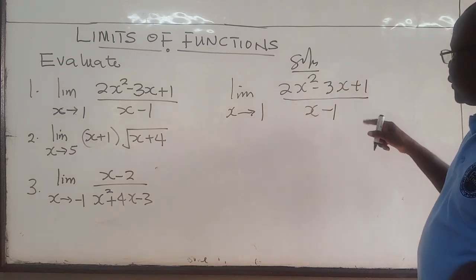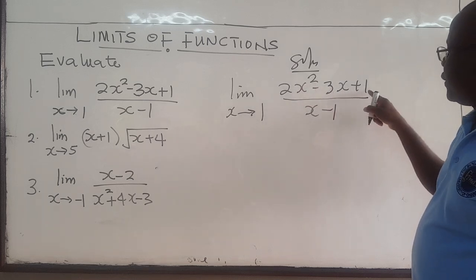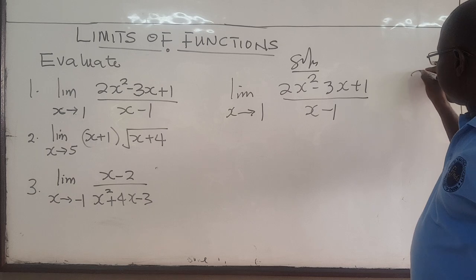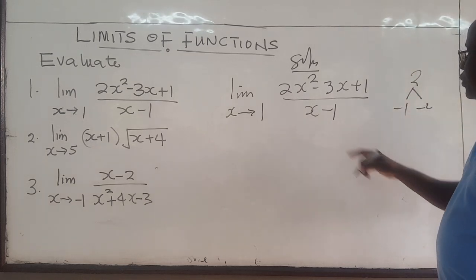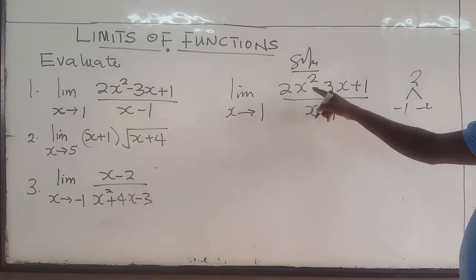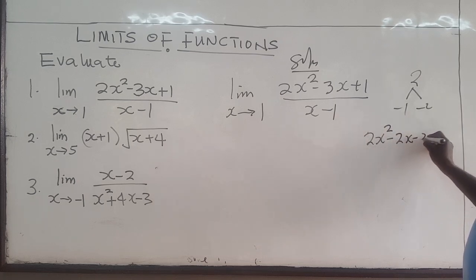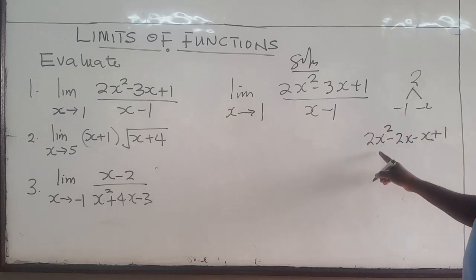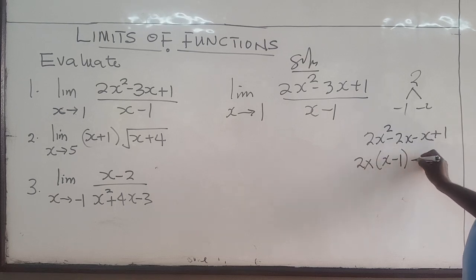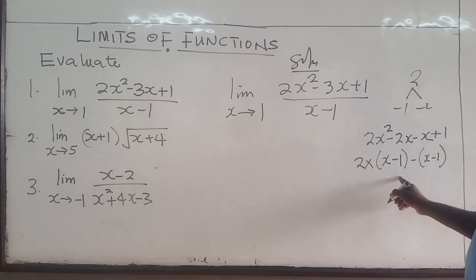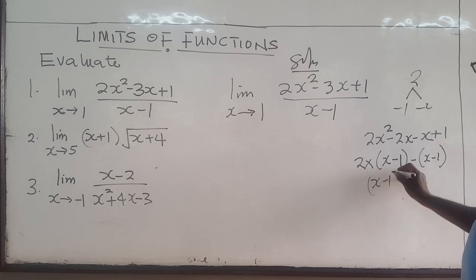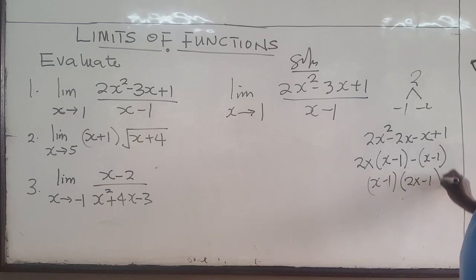Notice that if you factorize the quadratic, this is easy. The leading coefficient is 2, so I need negative 1 and negative 2 to factorize that. So 2x squared minus 3x plus 1 is 2x squared minus 2x minus x plus 1. I can rewrite it as 2x(x minus 1) minus 1(x minus 1), which factorizes as (x minus 1)(2x minus 1).